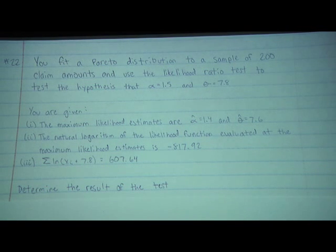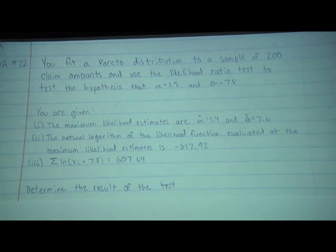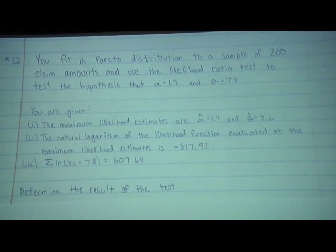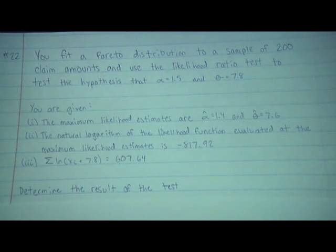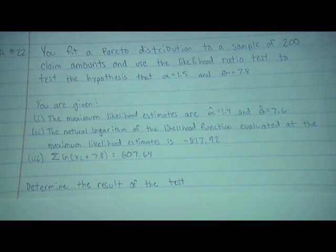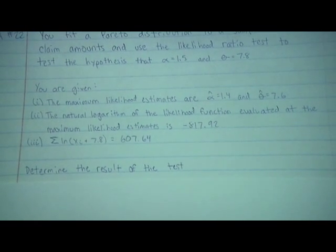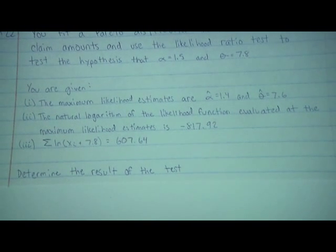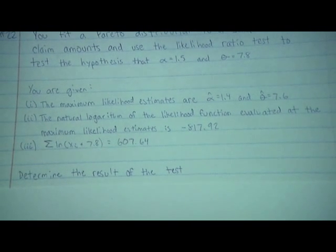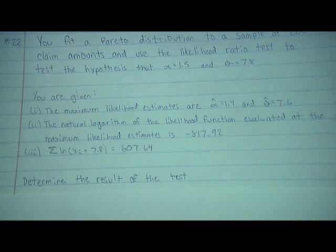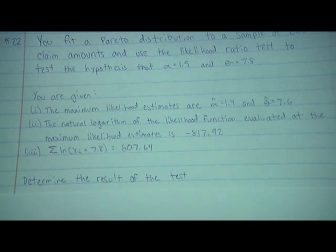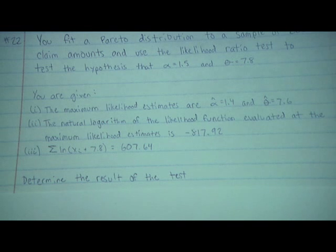Now doing problem 22: you fit a Pareto distribution to a sample of 200 claim amounts and use the likelihood ratio test to test the hypothesis that alpha equals 1.5 and theta equals 7.8. The maximum likelihood estimates are alpha-hat equals 1.4 and theta-hat equals 7.6. The log-likelihood at the MLE is negative 817.92, and the sum of ln(x_i + 7.8) is 607.64.